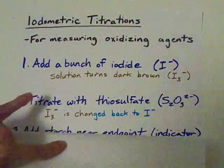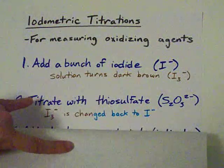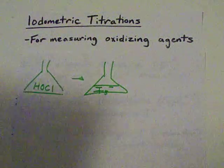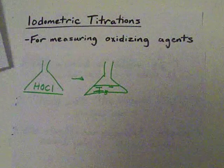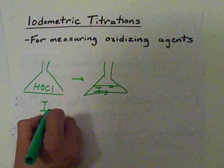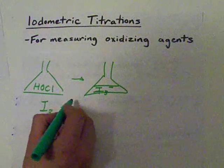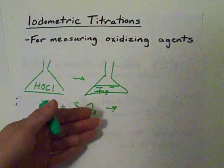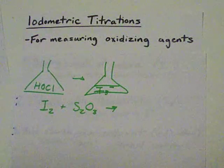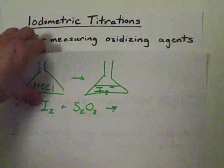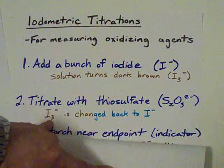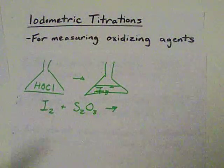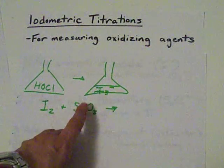Then what do you do? Well, then you titrate this with thiosulfate. The point is that when you have I3 minus, which contains I2, reacting with thiosulfate, you end up with some product. Point is, this gets rid of that. So all of a sudden you don't have any more I2, or in this case I3 minus. You've changed it all back to I minus. Now this is your standard solution, so you know exactly how much of that you added.